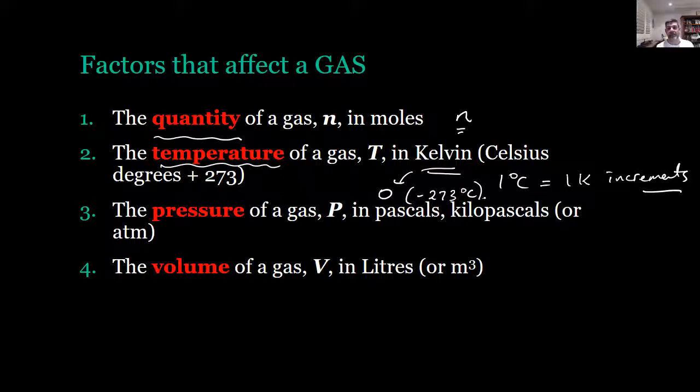The third thing that's important is pressure, and the symbol for pressure is obviously P. It's measured generally in kilopascals or atmospheres of pressure. And the final one is volume—capital V—expressed in liters. So these are the standard units and the four important descriptors of gases.